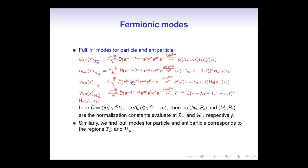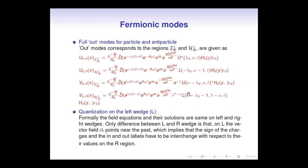The full in-modes for particle and antiparticle are then given by this expression — these are the eight full in-modes on the right wedge of Rindler spacetime. Likewise, we have eight out-modes for the right wedge of Rindler spacetime, giving 16 modes in total for the right wedge. Similarly, we can quantize our field on the left wedge. The field equations and their solutions are formally the same on the left and right wedges.